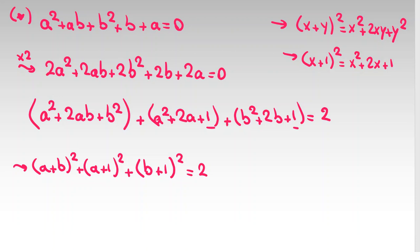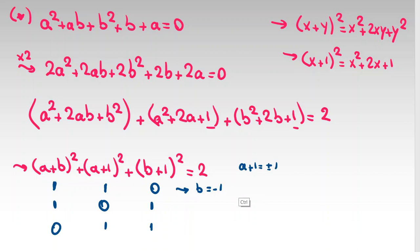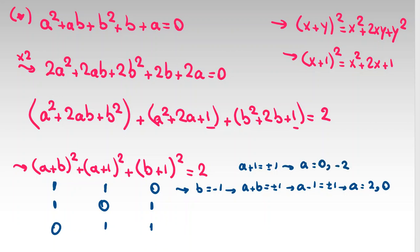Because A and B are integers, these are perfect squares summing to 2, so two of them must equal 1 and one must equal 0. The possible cases are: (1,1,0), (1,0,1), (0,1,1). Examining the first sub-case where B plus 1 squared equals zero, so B equals negative one. Then A plus 1 equals plus or minus 1 and A plus B equals plus or minus 1, giving A minus 1 equals plus or minus 1, so A equals 2 or 0. Checking both against the other constraint, the only common value is A equals 0, B equals negative one.